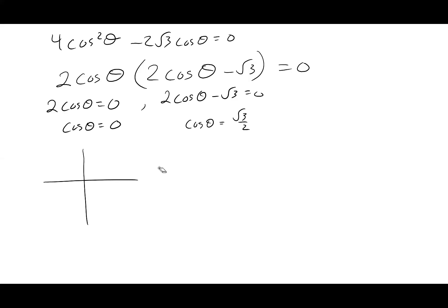When is cosine theta going to give me zero? Cosine represents the x-axis value and it gives me zero at the points zero-one and zero-negative-one on the unit circle — so theta equals 90 degrees and theta equals 270 degrees.